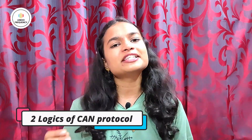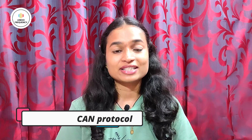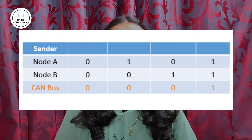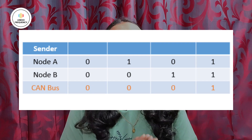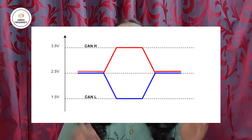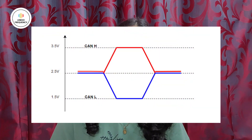In CAN, the dominant and recessive state refers to two logical levels that can be transmitted over the communication bus. The CAN protocol uses a wired-AND logic mechanism to determine the dominant or recessive state on the bus. The screen represents the table of wired-AND logic for reference. This logic is implemented through the use of differential signal methods. In CAN, the bus lines are called CAN high and CAN low, and these two lines are complementary and carry the signals to determine the logical levels.